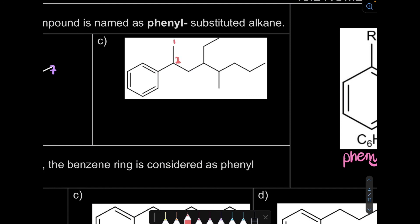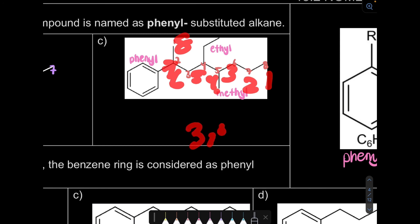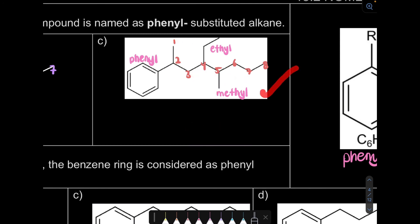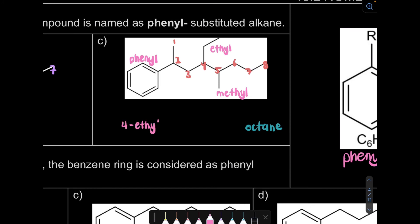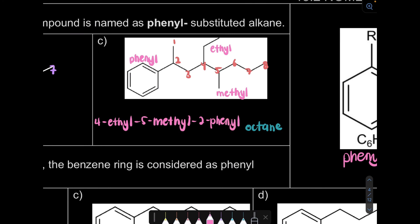For question C, the longest carbon chain has 8 carbons. The substituents are at positions 2, 4, and 5 — choosing these over 3, 4, 7 since the numbers are smaller. When naming, we list alphabetically: ethyl (at 4), ethyl (at 5) — using diethyl — and phenyl at carbon 2. The name is 4,5-diethyl-2-phenyloctane.